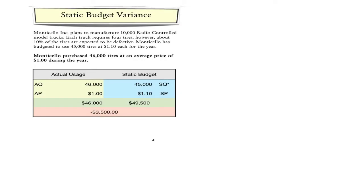The static budget variance is often the first place to start. We look at the difference between the actual cost of a resource and what that resource was budgeted to cost. In this example, the actual cost was 46,000 tires purchased and used at $1 each for $46,000, whereas the budget called for 45,000 tires at $1.10. The actual amount of usage was $3,500 less than the budgeted amount — a favorable cost variance.